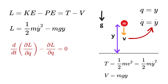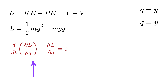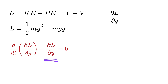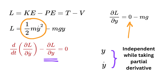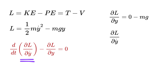For our free fall example, q is y and q-dot is y-dot, which is the velocity v of the point mass. So the kinetic energy can be written as one-half m times y-dot squared, and L equals one-half m y-dot squared minus mgy. The equation of motion becomes this with q replaced by y and q-dot by y-dot. The partial derivative of L with respect to y is zero because there is no y term in the kinetic energy part, while the derivative of the potential energy term gives mg. When taking the partial derivative with respect to y, we treat y-dot as independent from y.